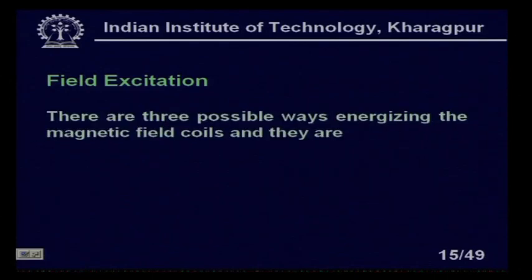For field excitation of the electromagnetic flow meter, there are three possible ways to energize the magnetic field coils: DC, 50 Hz AC, or pulsating/interrupted DC. When DC is applied, the fluid moving in the DC magnetic field generates a voltage via Faraday's law. AC at 50 Hz has been used for many years and allows easy signal amplification. Pulsating DC is the most modern method.